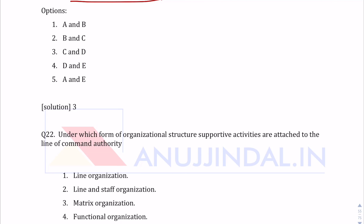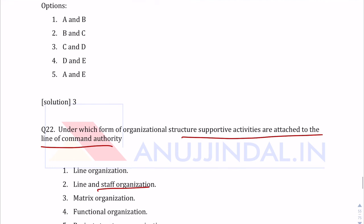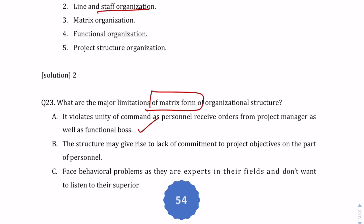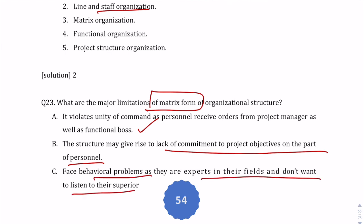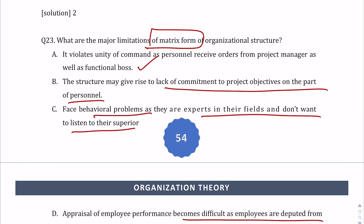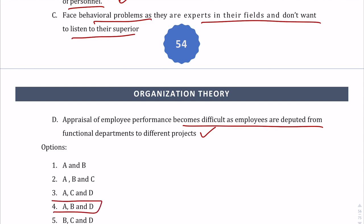Question 4: Under which form of organization structure are supportive activities attached to the line of command authority? The answer is line and staff — option two. Question 5: What are the major limitations of matrix form of organization structure? It violates unity of command and personnel receive orders from both the project manager and functional boss. There is lack of commitment to project objectives. Appraisal of employee performance becomes difficult as employees are deputed from functional departments to different projects. Options A, B, and D are correct.